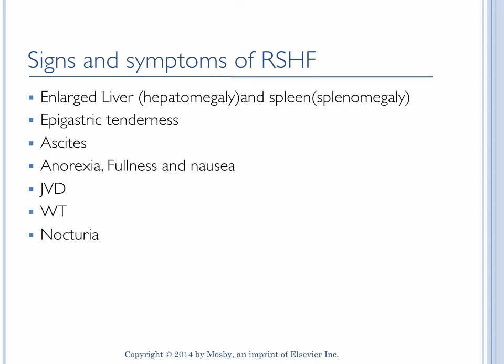Ascites will be seen in right-sided heart failure patients. There is a lot of pressure in the venous system, which causes fluid to leak out of the vascular space into the abdominal cavity. A second reason for ascites is that the liver can no longer make albumin as it used to — albumin normally holds fluid in vascular spaces — so when albumin is low, fluid leaks into the peritoneal cavity.